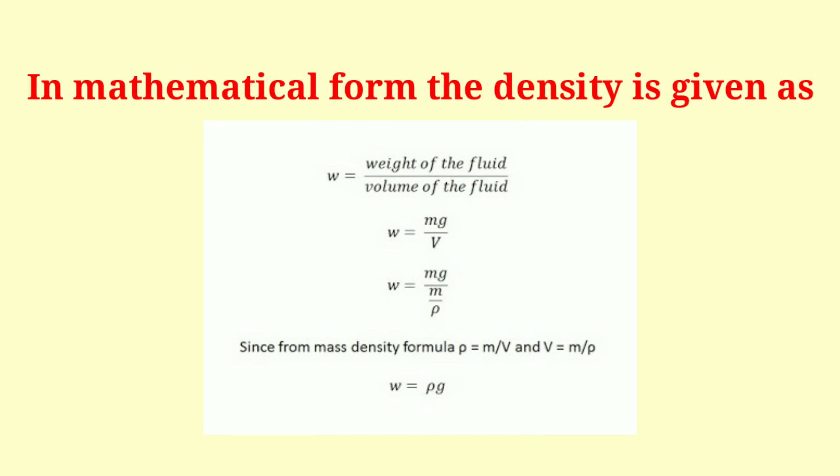Mathematically, W = weight of fluid / volume of fluid. W = Mg/V. W = Mg/(M/ρ). Since from the mass density formula, ρ = M/V and V = M/ρ, we can write W = ρg.